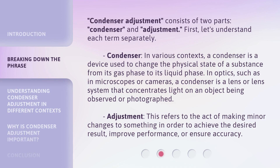Condenser Adjustment consists of two parts: condenser and adjustment. First, let's understand each term separately. Condenser — in various contexts, a condenser is a device used to change the physical state of a substance from its gas phase to its liquid phase.